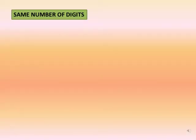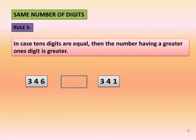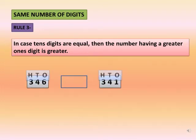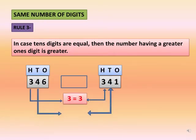So we will put the greater sign towards 313. Rule 3: In case tens digits are also equal, then the number having a greater ones digit is greater. Let us compare 346 and 341. As the digits at hundreds and tens place are equal, we will compare the digit at ones place.